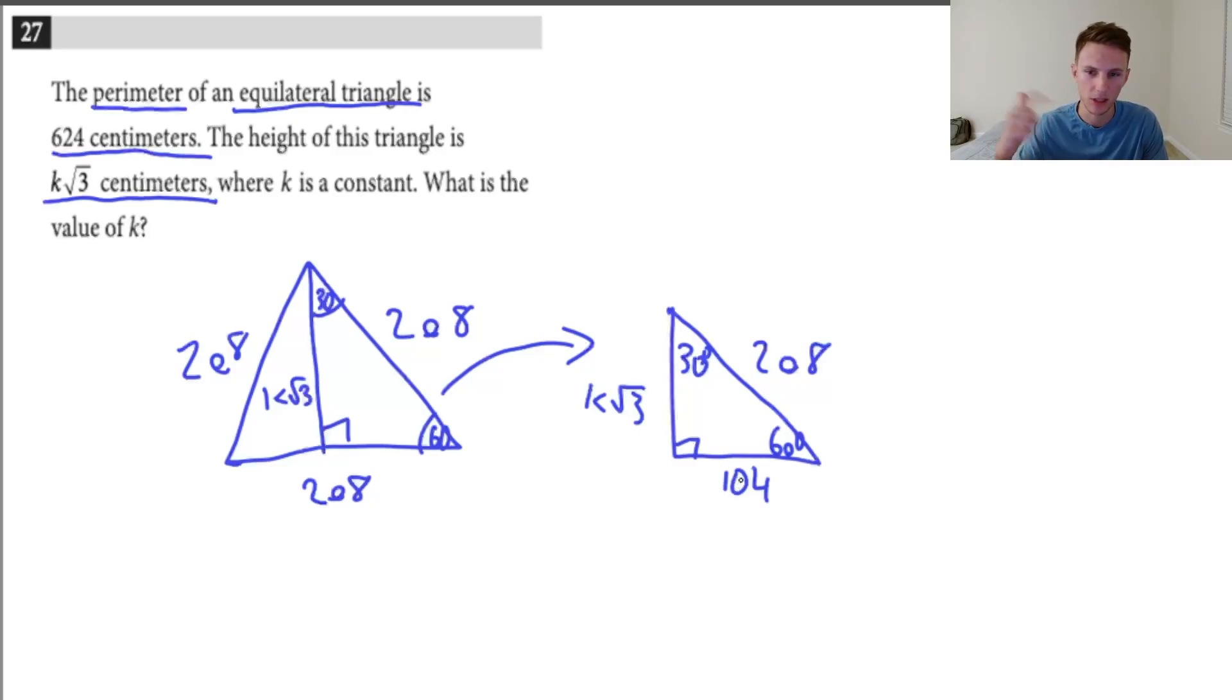They give you this formula on the formula sheet in the beginning actually, so you don't even need to memorize this. But basically, k is just going to equal this number over here in this case. So k is just going to equal 104. It's really that simple.